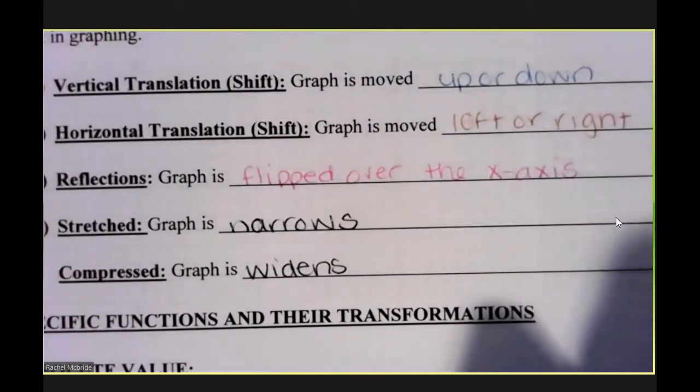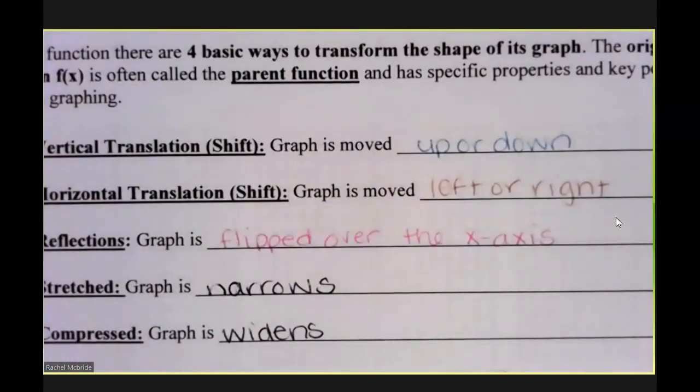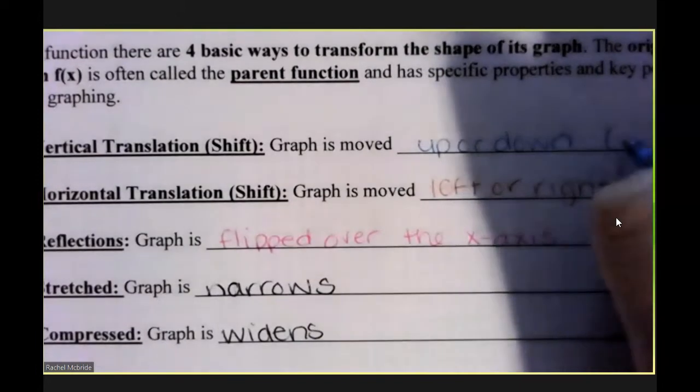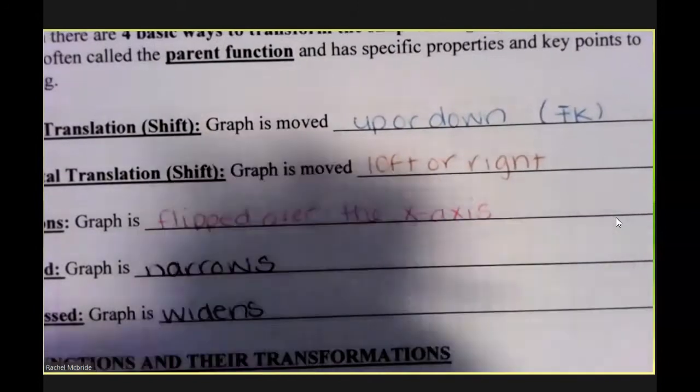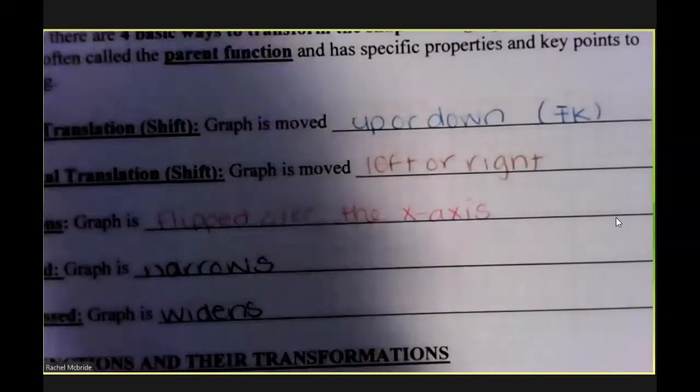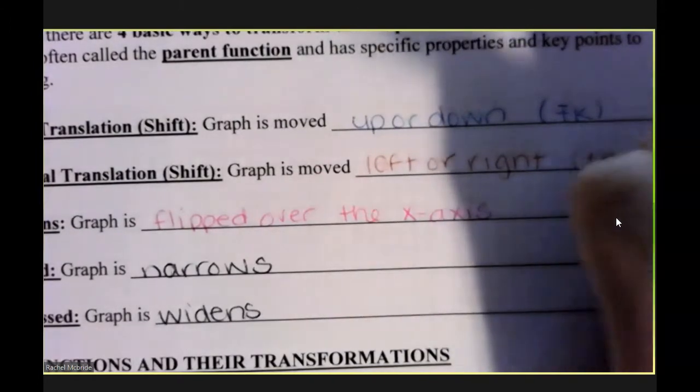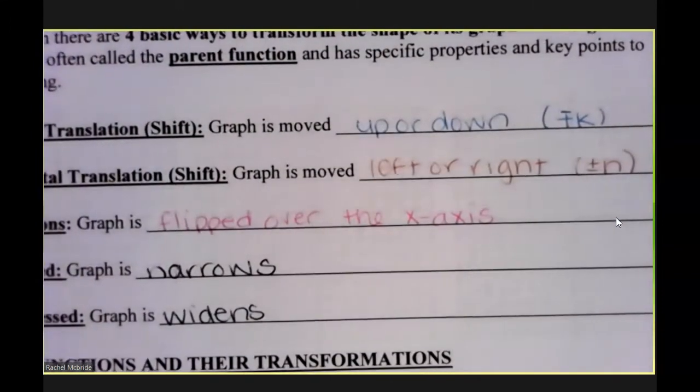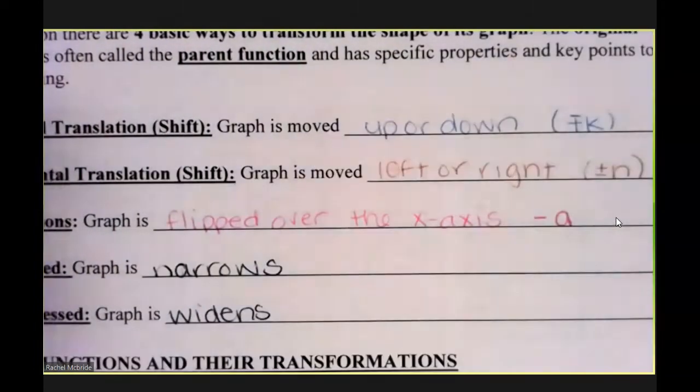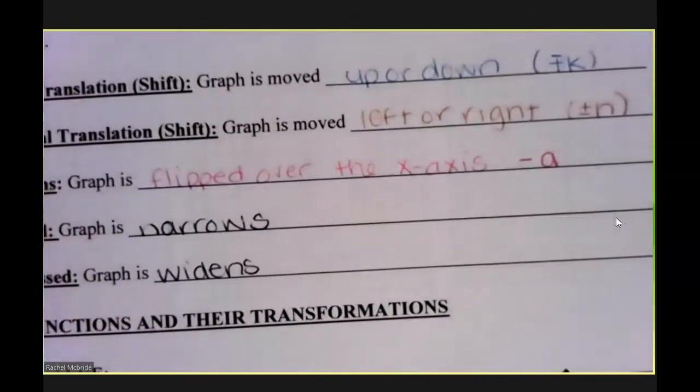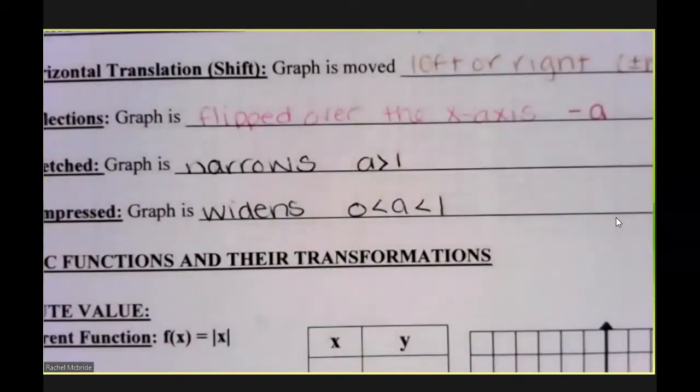In terms of absolute value functions, a vertical translation or a movement up or down was a plus or minus k value. A movement left or right was a plus or minus h value. A reflection created a negative a. If it was stretched, then a was greater than 1. And if it was widened, then my a value was between 0 and 1.